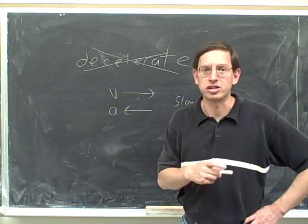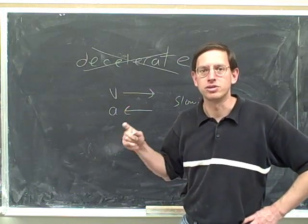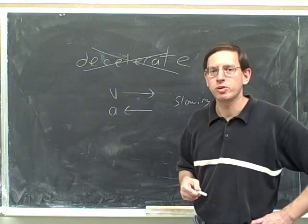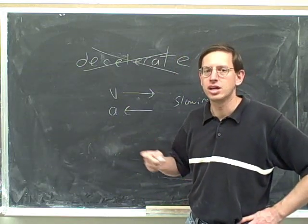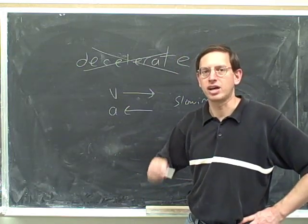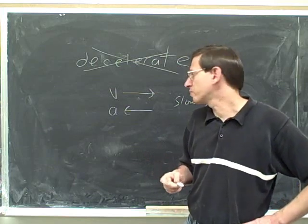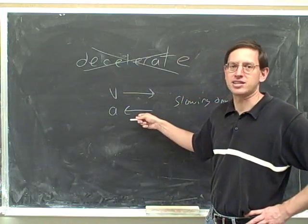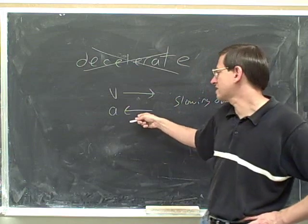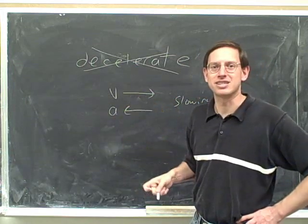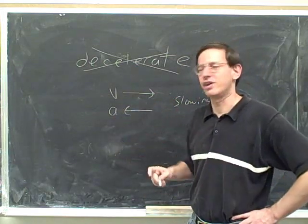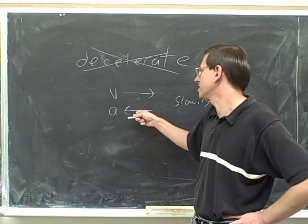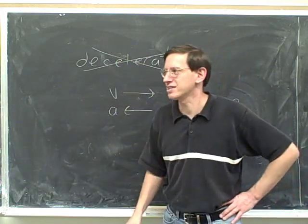The only time it wouldn't have any acceleration is if it's going at constant speed. Right now I'm just talking about one-dimensional motion. In one-dimensional motion, the only time we would say that something has no acceleration is when it's moving at constant speed. If it's speeding up, we would say it has an acceleration, and if it's slowing down, it also has an acceleration — it just has an acceleration that's opposite to the velocity. That actually is pretty natural sounding. This object does have an acceleration; it's just that the acceleration is opposite to the velocity.